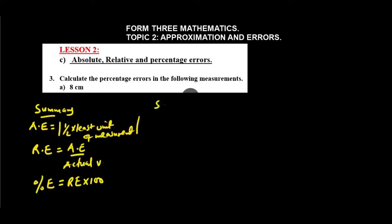Back to our problem — we are calculating the percentage error in the measurement 8 centimeters. When using measuring instruments, each instrument has a level of accuracy, and that accuracy determines how values are recorded. For 8 centimeters, the value is expressed to the nearest whole number, that is, to the nearest centimeter. So the least unit of measurement is 1 centimeter.